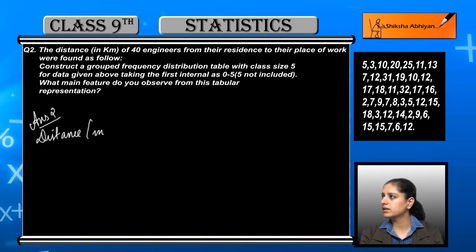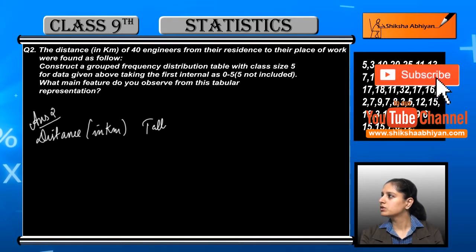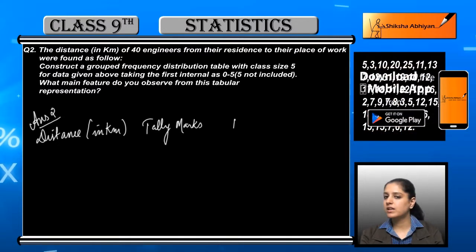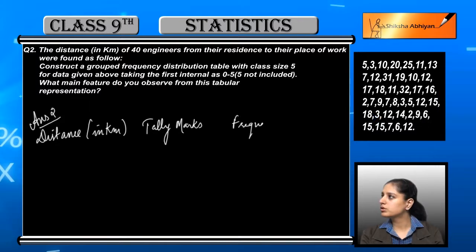Let us see. First we will divide this into columns. Distances are given to us, so we will make the first column as distance in kilometers, second will be tally marks as usual, and the third will be frequency.